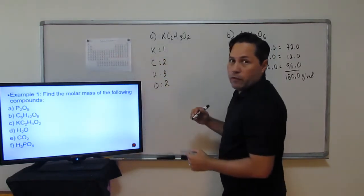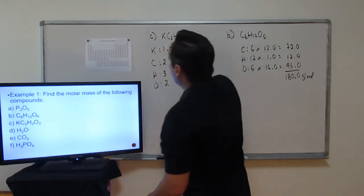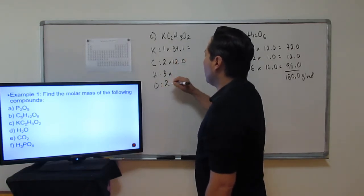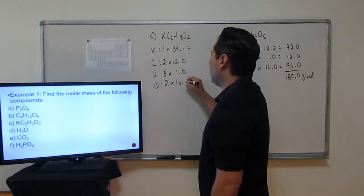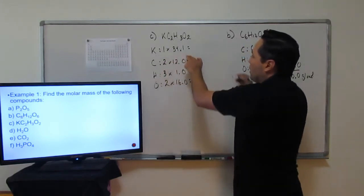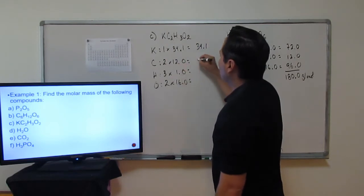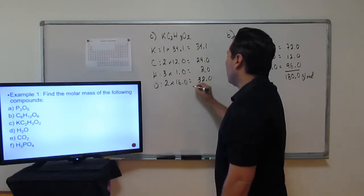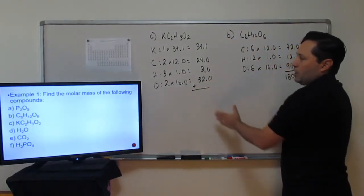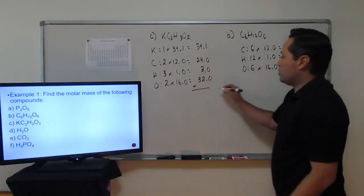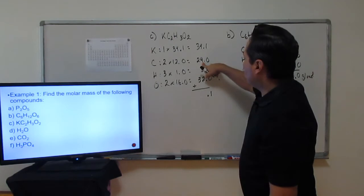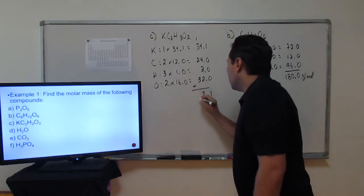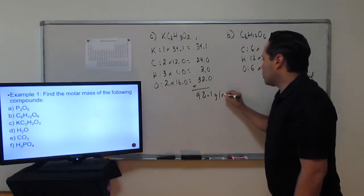From the periodic table: potassium is 39.1, carbon is 12.0, hydrogen is 1.0, and oxygen is 16.0. You multiply to get the products: 39.1, 24.0, 3.0, and 32.0. Adding them all together gives the molar mass of potassium acetate: 98.1 grams per mole.